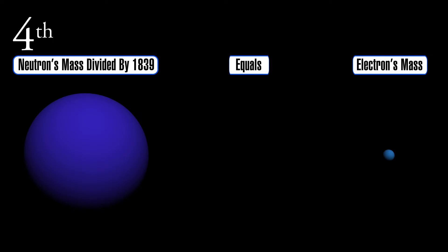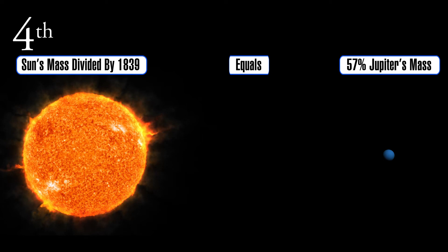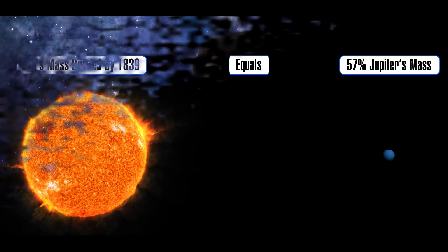Fourth, the neutron decays into two particles — a proton and an electron — while emitting neutrino energy. The mass of the neutron divided by 1839 equals the mass of the electron. The mass of the sun divided by 1839 should equal the mass of a cosmic scale electron: 1×10²⁷ kilograms. The mass of Jupiter is 2×10²⁷ kilograms, while the eight planets total 3×10²⁷ kilograms. Is this just a coincidence?